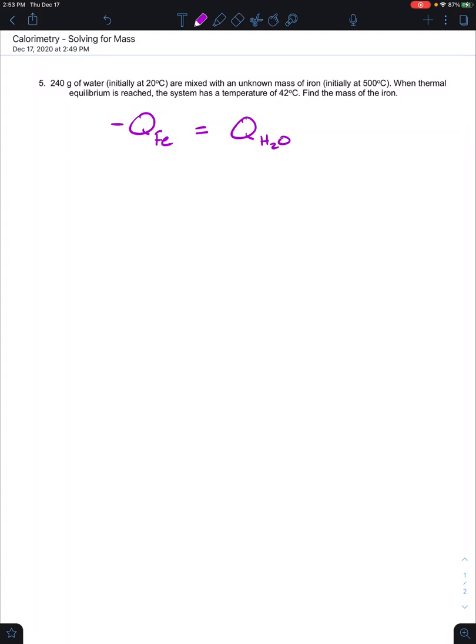Now, it looks like we want to know what is the mass of the iron. So when we think about our equation, we're going to have it as negative M, and that's going to stay the variable. The specific heat of iron, C, times the final temperature Tf minus the initial temperature Ti, also known as delta T,